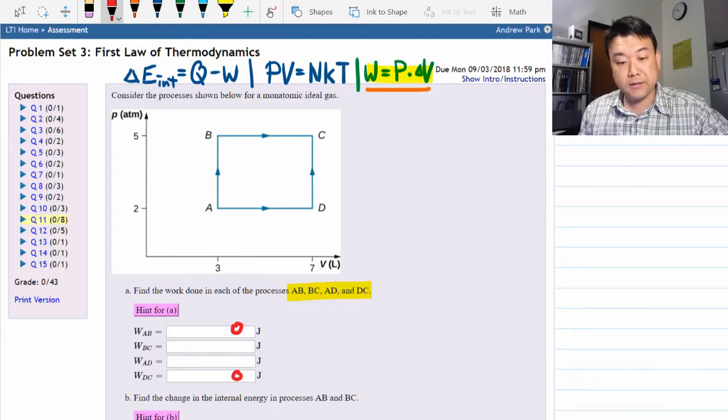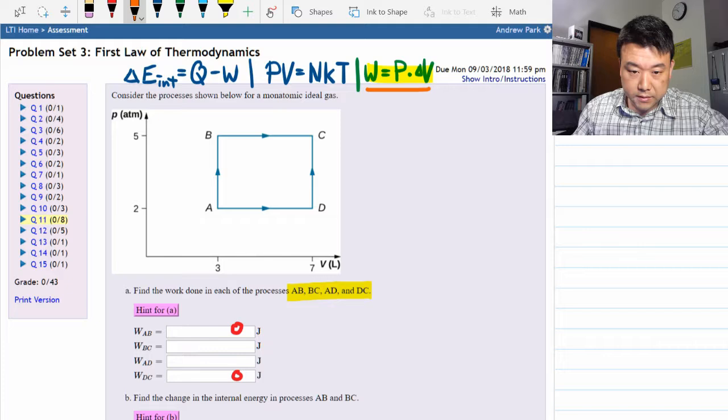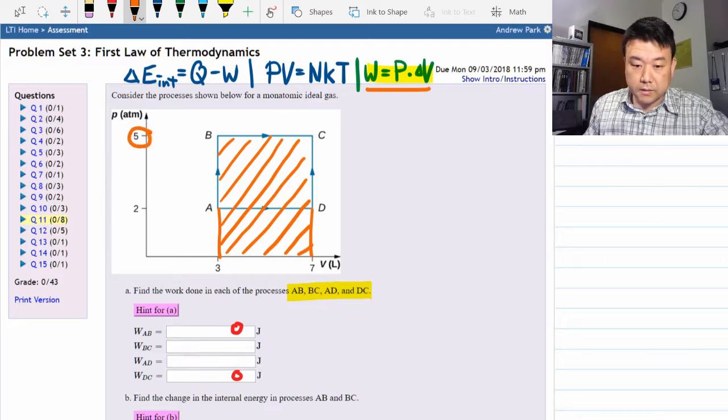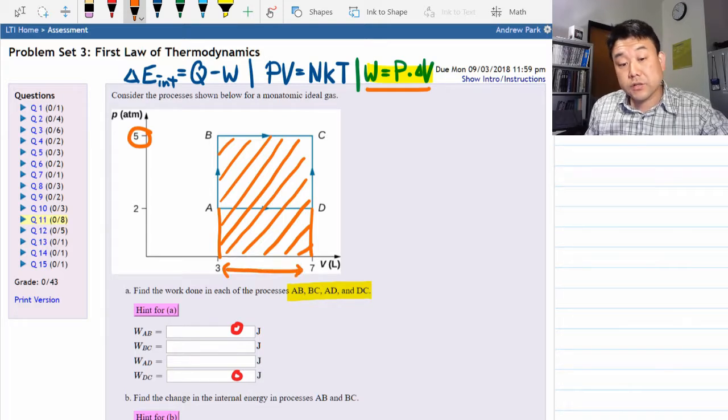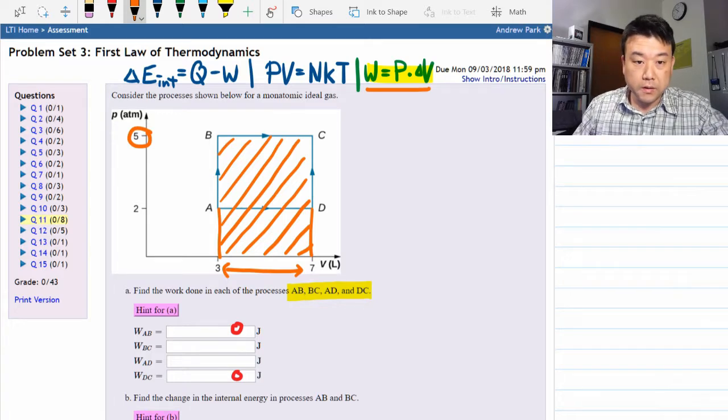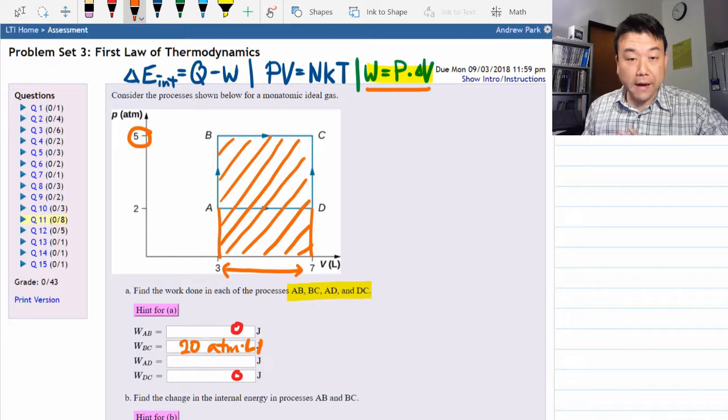It's the BC and AD where you have to do a little more calculation. So for BC, the area under the curve is this. You need to calculate the pressure, five atmospheres, times this difference in volume, seven minus three liters. Now for the answers for the homework website, you should convert it to SI units and plug in the answer in joules. But here for this video, let me work it out in the unit of atmosphere times liter because I have to do this in my head, then you can do the unit conversion. So the work done here would be five times four, so 20 atmosphere liter. All right, that's easy enough.